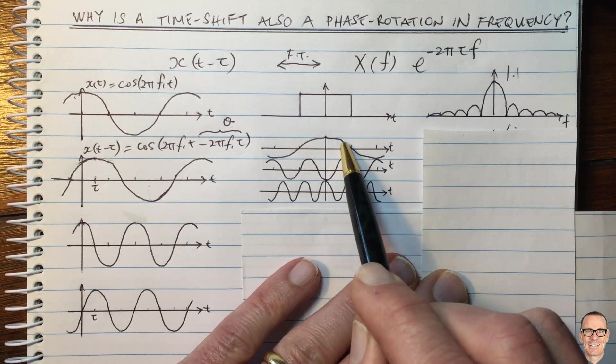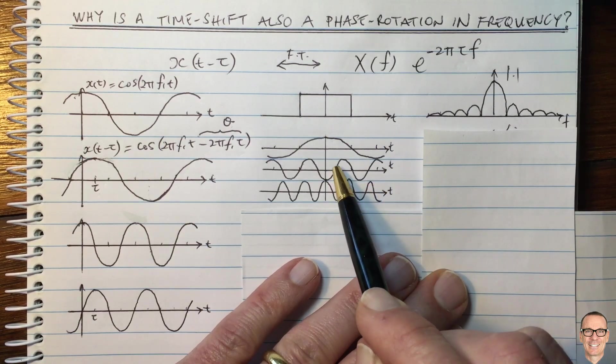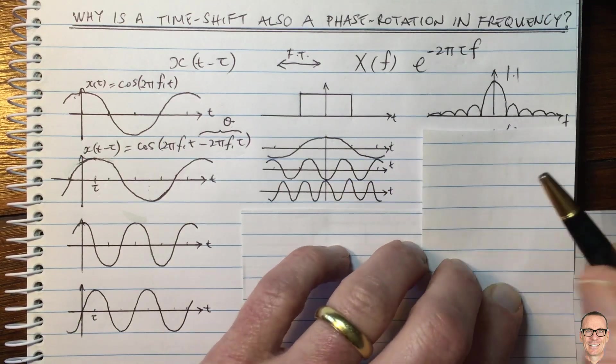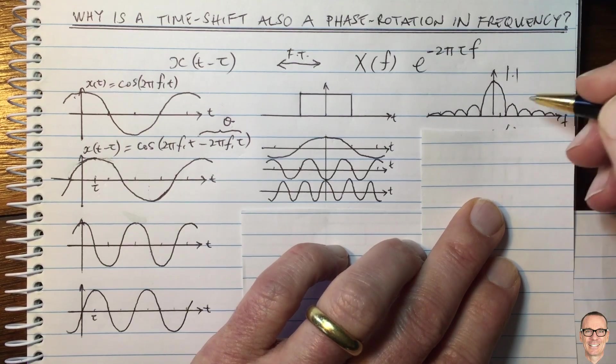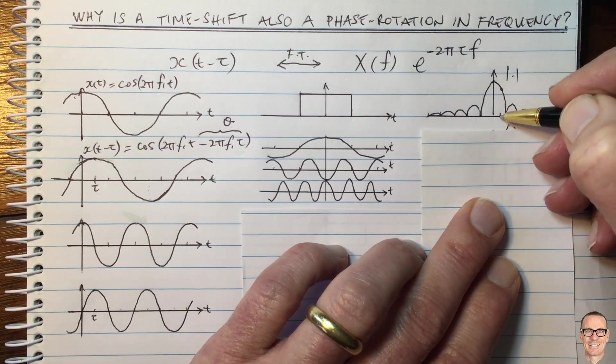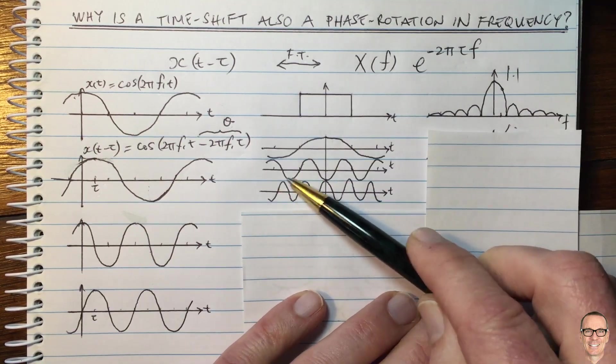This one here is the cos wave that matches with the period of this square. This one is, and where is it over here on the frequency plot? That is this frequency here. So there's a positive amount of that frequency. Okay, and what about this one here?